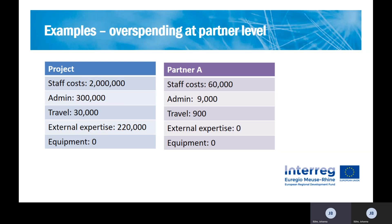Of course, we always assume that the project still follows its overall objectives and planned activities. The rule gives you the flexibility because we know that sometimes you need more or less budget for certain activities. And even in this theoretical example, the partner could go to more than 20% just on the staff cost budget, given that 400,000 is the maximum flexibility for the staff cost budget line on project level.